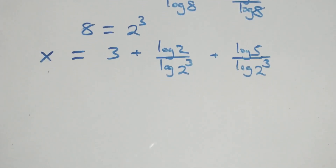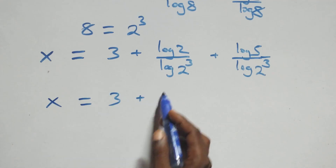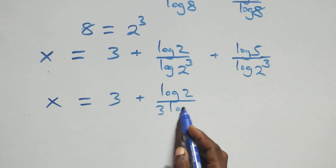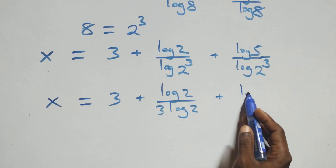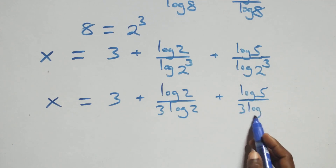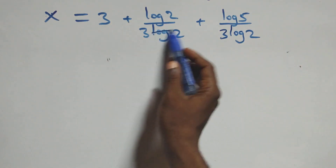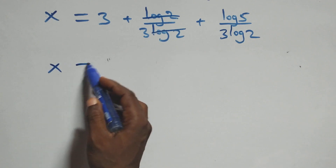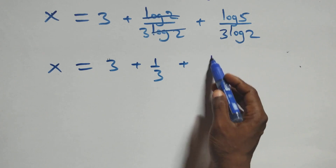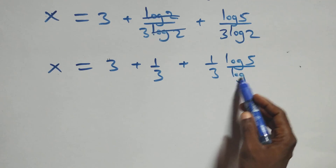When we apply the power rule of logarithm, the 3 comes out from log(2³) in both terms, giving x equals 3 plus log 2 over (3 log 2) plus log 5 over (3 log 2). The log 2 terms cancel in the first fraction, and we have x equals 3 plus 1 over 3 plus (1 over 3) times (log 5 over log 2).